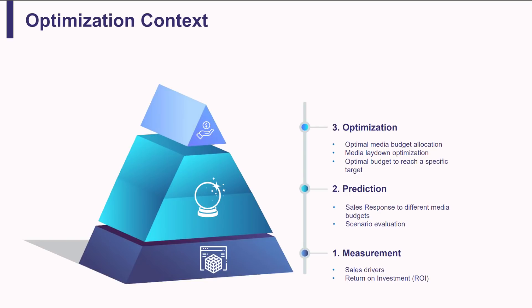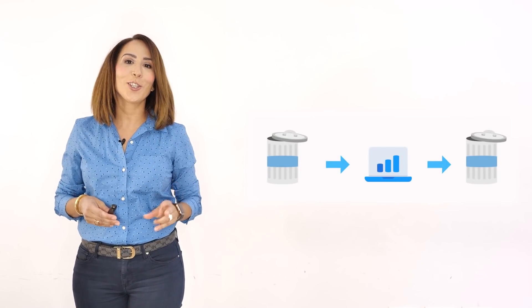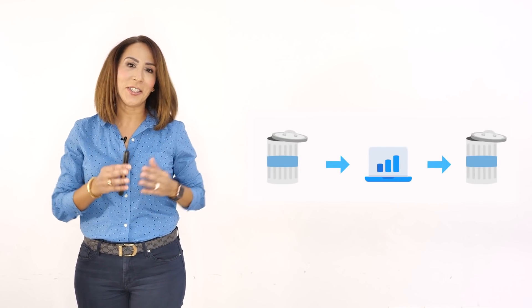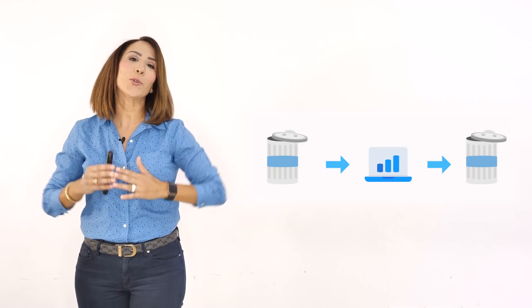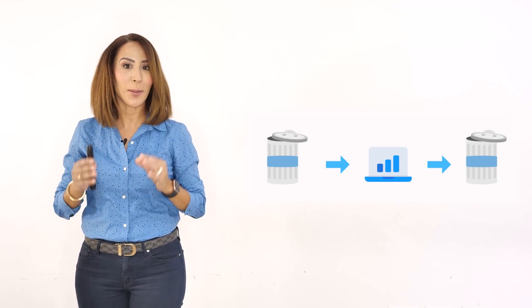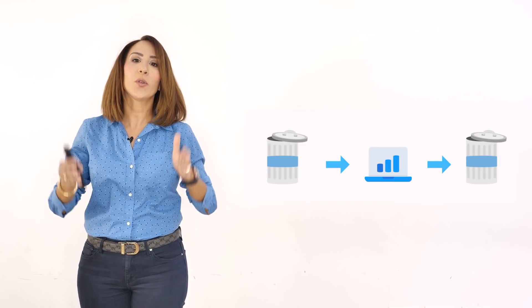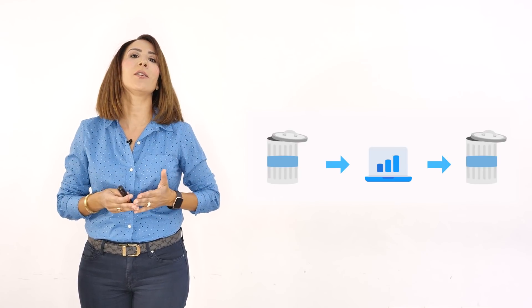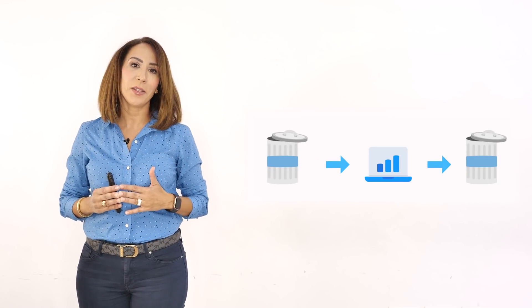The more robust your model is, the more capable you will be of providing sound and robust results and recommendations to your clients. I always say there are two garbage-in-garbage-out situations in marketing mix modeling. The first is in the modeling stage — if you have garbage data, you will get a garbage model. The second is in optimization and forecasting — if you have a garbage model, you will end up with garbage optimization and garbage predictions.